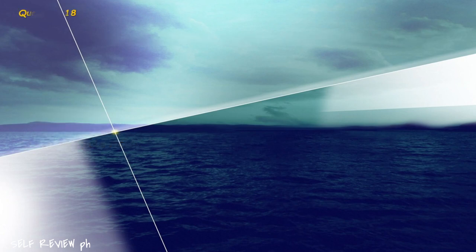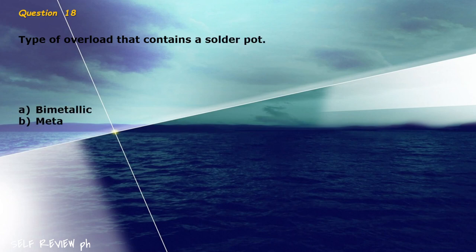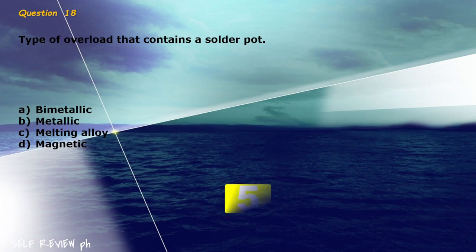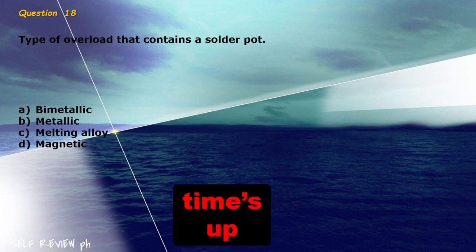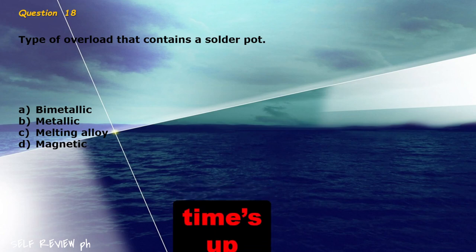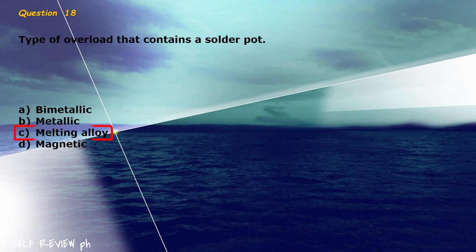Question 18: Type of overload that contains a solder pot. A) bimetallic, B) metallic, C) melting alloy, D) magnetic. The correct answer is letter C, melting alloy.